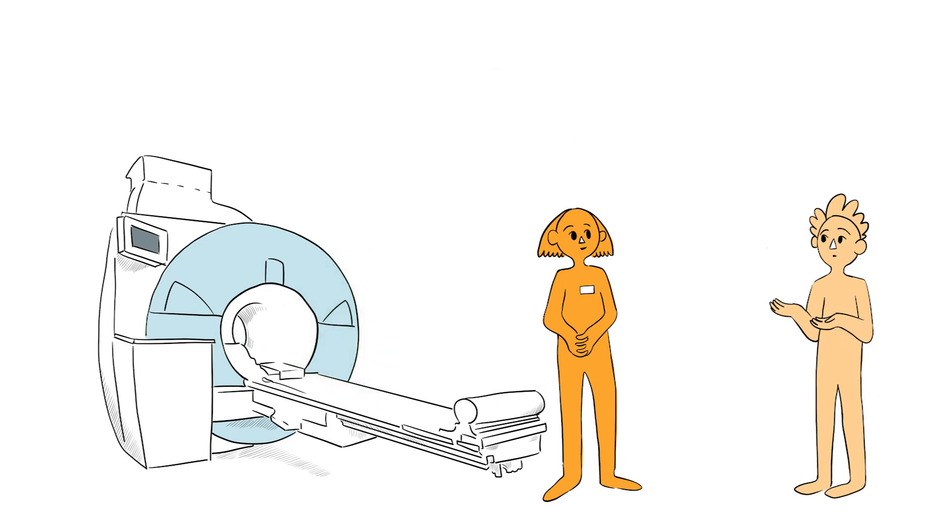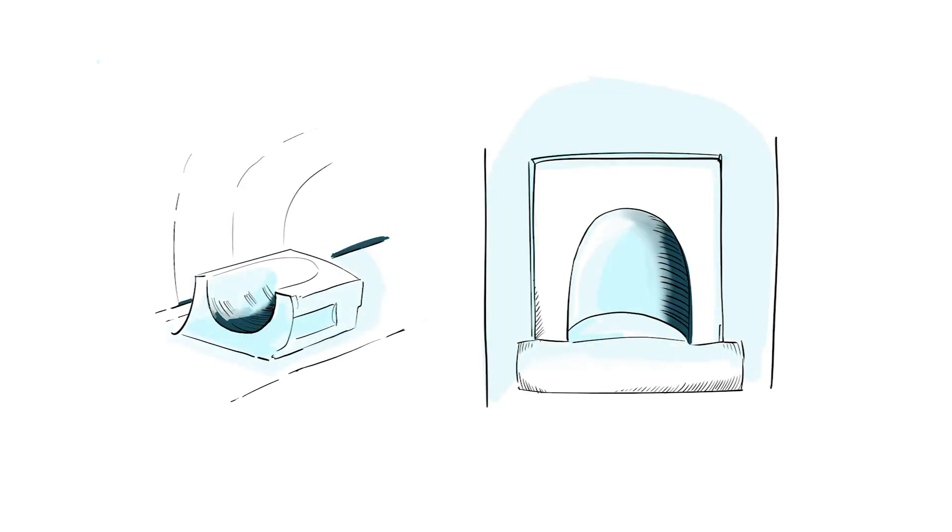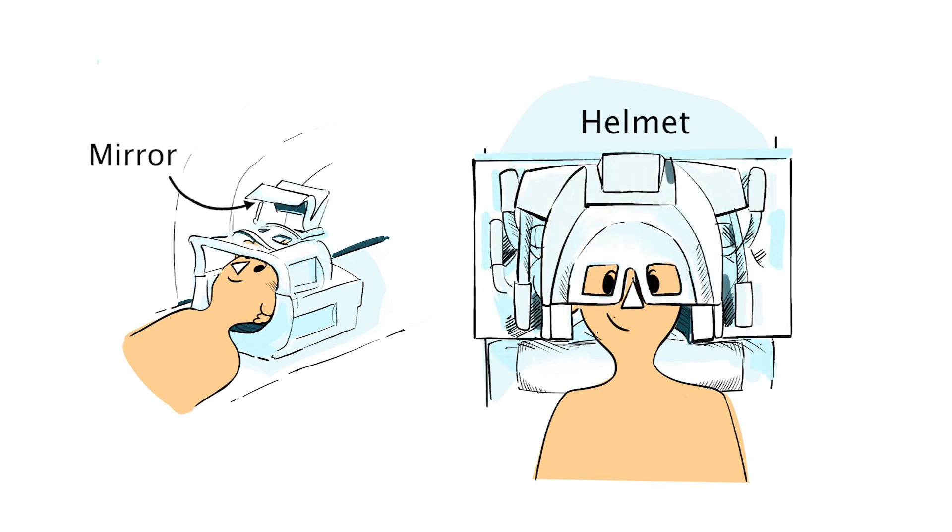If I'm having a brain scan, will only my head go into the scanner? No. We collect the clearest images right at the centre of this magnet. This means that most of your body will go into the scanner so that your head is close to the centre. We also give you a special helmet that detects the signal. This has a mirror that allows you to see a screen placed inside the scanner.